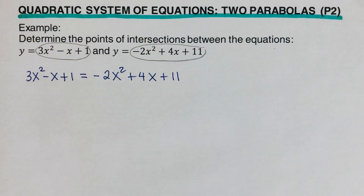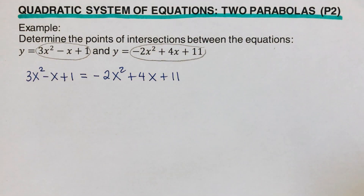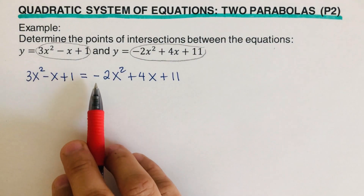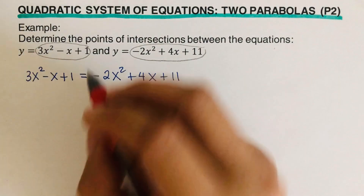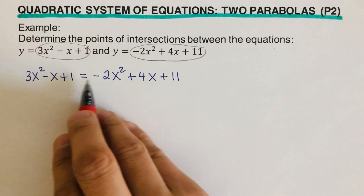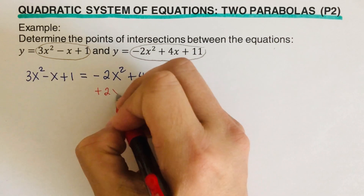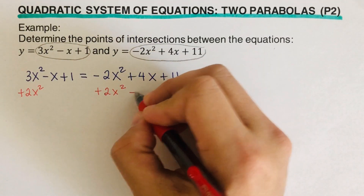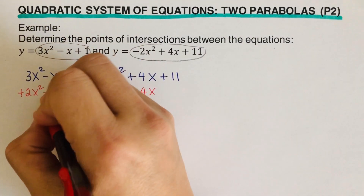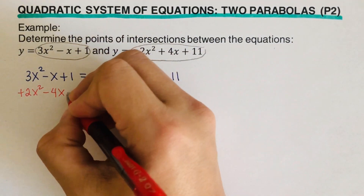We are supposed to use the zero product property, which means we have to make one side equal to zero. So let's make the right side equal to zero by taking the opposite of each term. We're going to add 2x squared to both sides, subtract 4x from both sides, and subtract 11 from both sides.